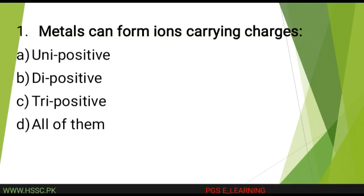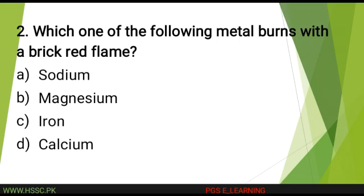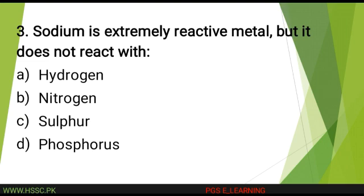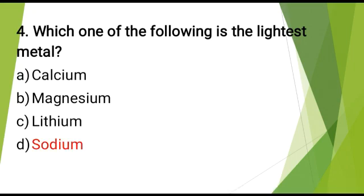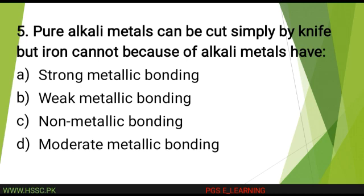Unit 8 Multiple choice questions. Metals can form ions carrying charges? The correct answer is: all of them. Which one of the following metals burns with a brisk red flame? The correct answer is: calcium. Sodium is extremely reactive metal but it does not react with? The correct answer is: nitrogen. Which one of the following is the lightest metal? The correct answer is: sodium. Pure alkali metals can be cut simply by knife but iron cannot, because alkali metals have? The correct answer is: non-metallic bonding.